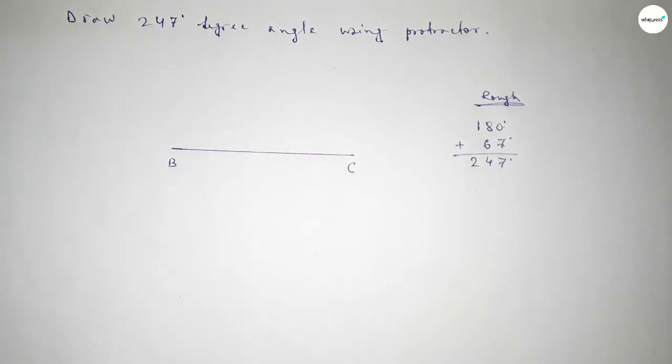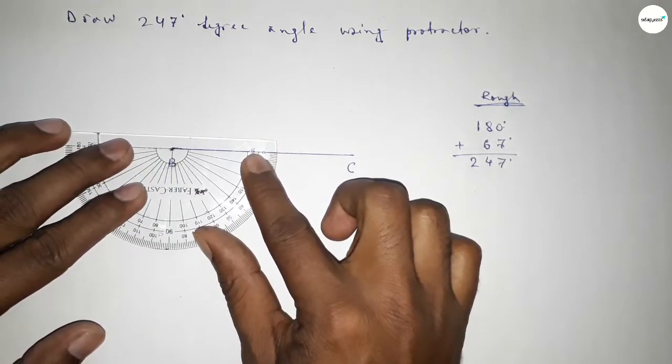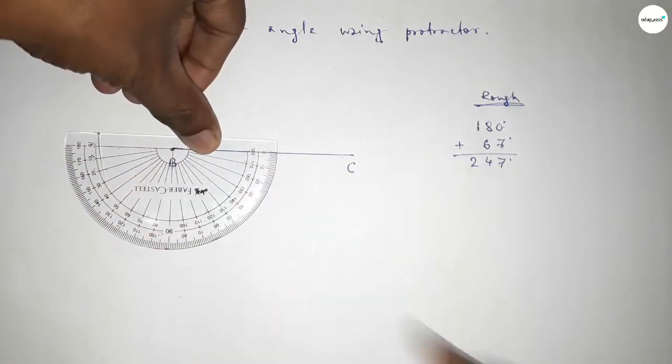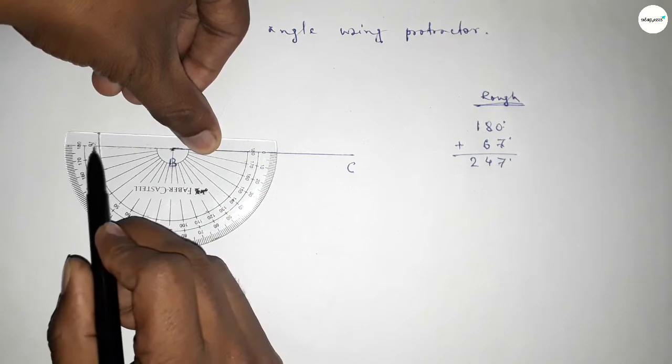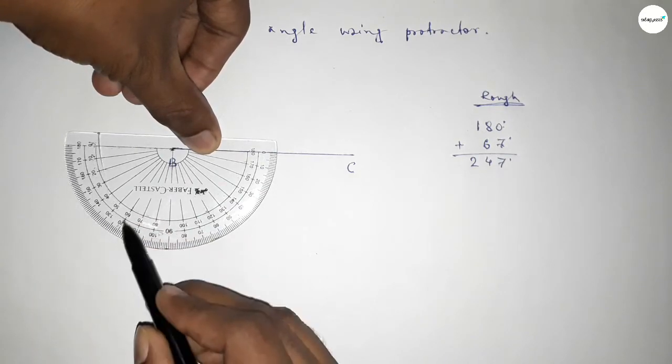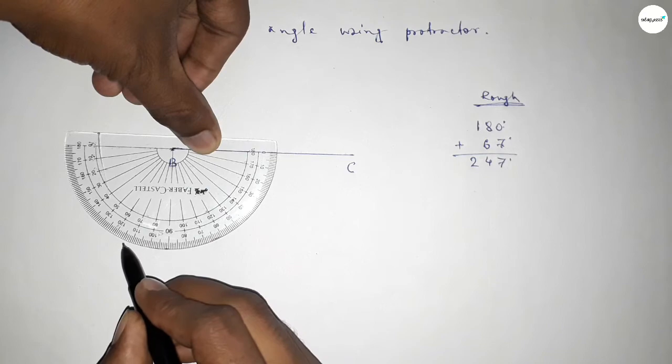So this is 180 degree, plus putting the protractor on the point B by this way and counting 67 degree angle. This is 180 degree angle, this is also starting 0, 10, 20, 30, 40, 50, 60, 65, 66, 67, so this is 67 degree.